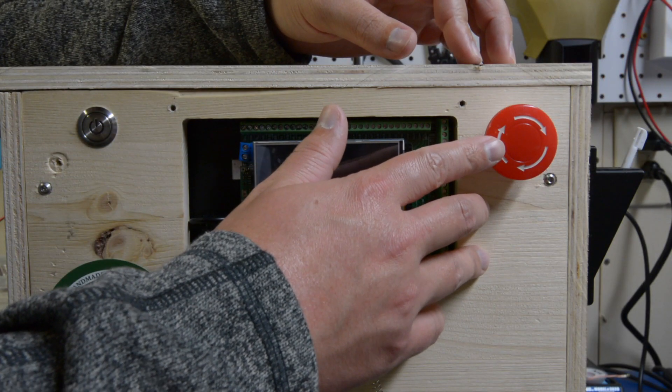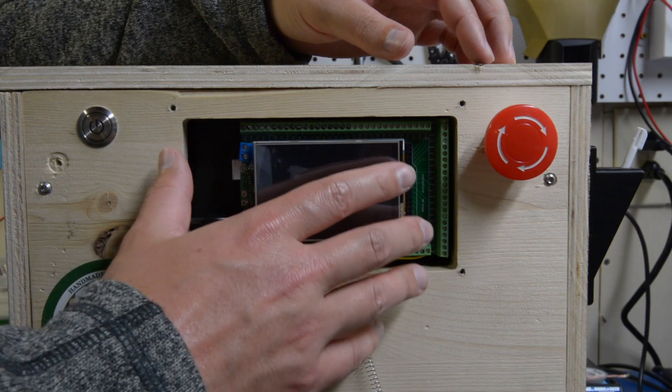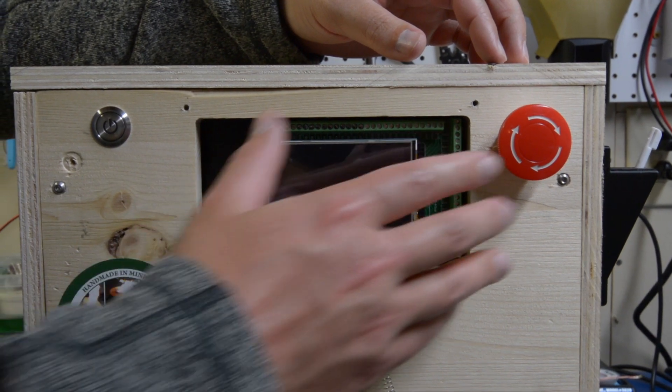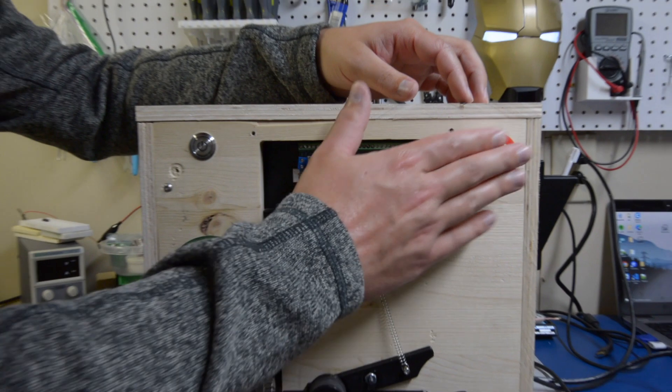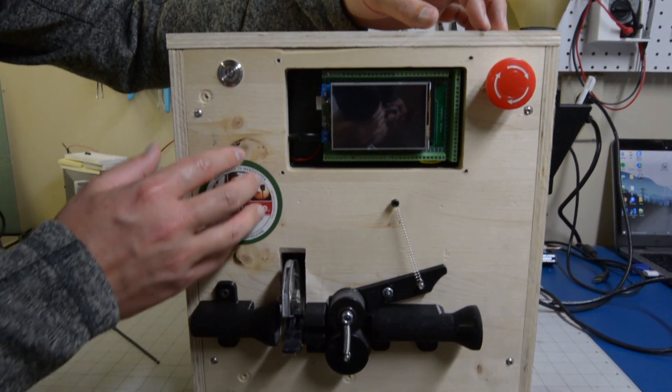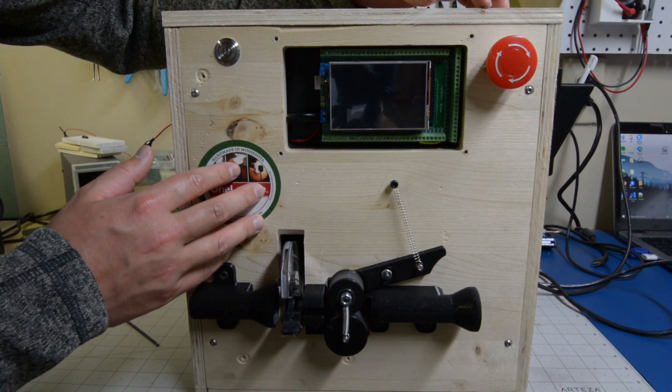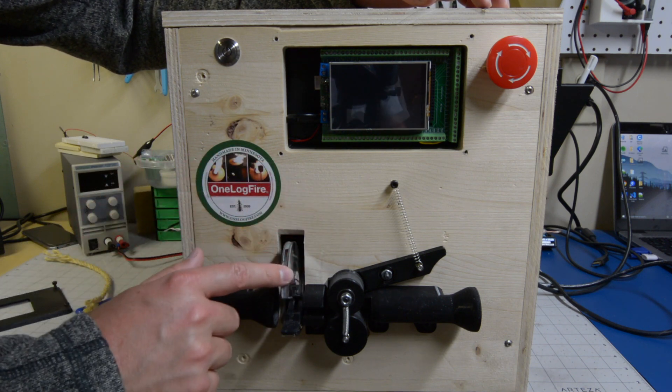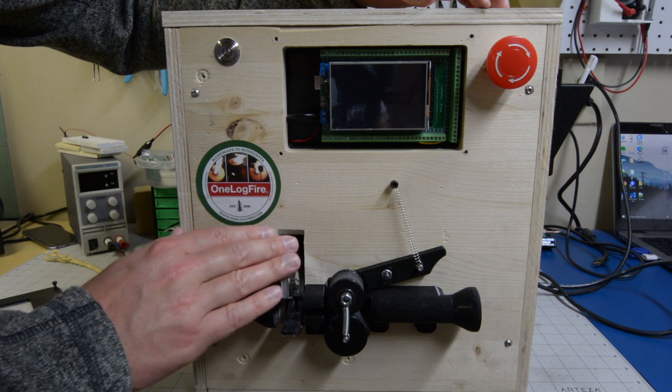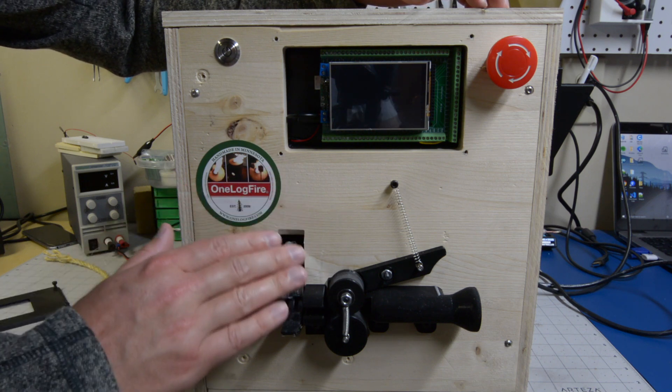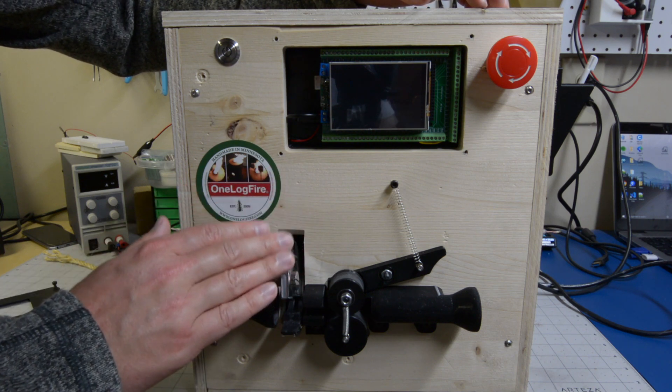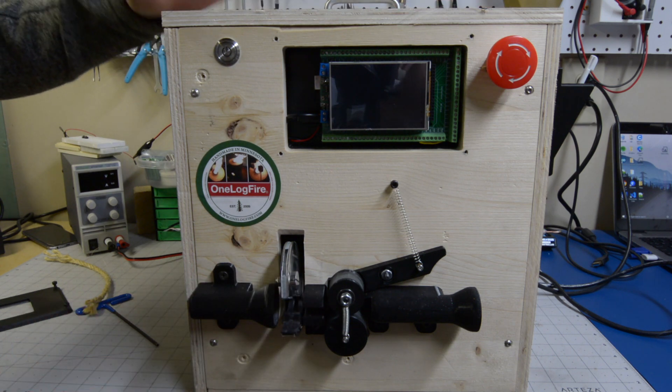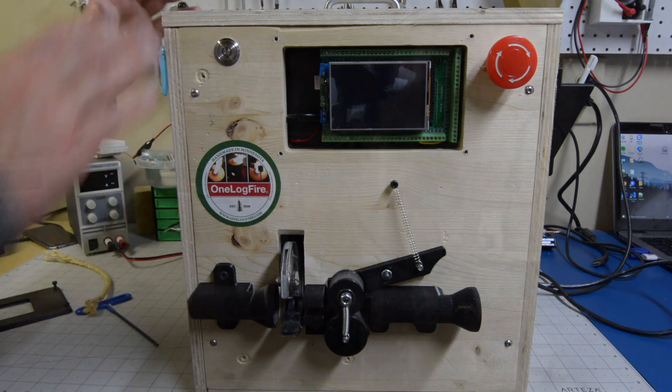Right here we've got our emergency kill switch which kills all power to the microcontroller and touch screen display. When it's pressed, it kills all power and only relays power to our linear actuator driver. The reason for this is we didn't want any software involved and it's very reliable knowing it's only hardware in case of an emergency. So now we will take off this housing and show you the back.